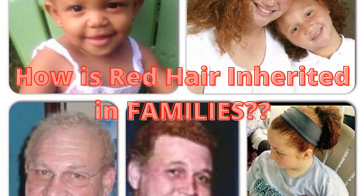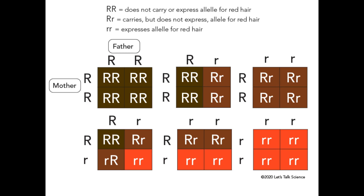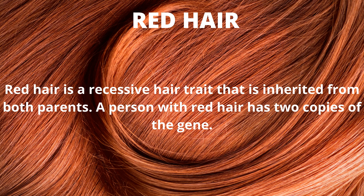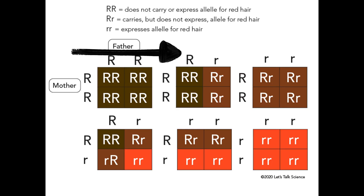Before I go through our family members and our red hair relatives, let's do a brief overview of how red hair is inherited. The uppercase double R's in this illustration represent a person who does not have red hair and does not carry the trait. If both parents have uppercase R's, they have zero percent chance of having a child with red hair, because red hair is a recessive gene — both parents have to pass the gene to the child.